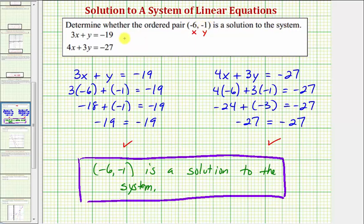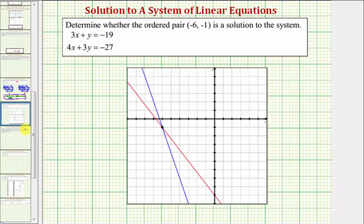And therefore, this point would be the intersection of these two lines. So here are the graphs of the two lines, and notice how the ordered pair negative six comma negative one is here, the point of intersection of the two lines. So because this point is on both lines, we know it would satisfy both linear equations, which we already verified algebraically.